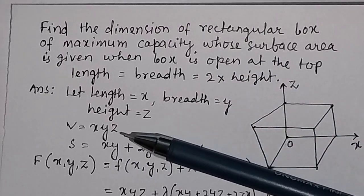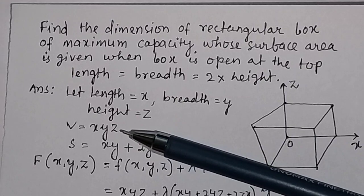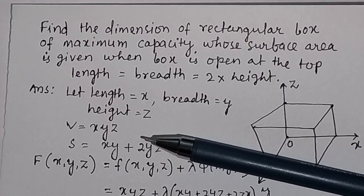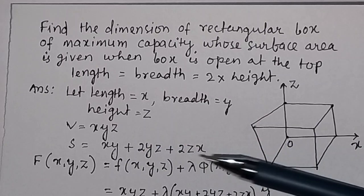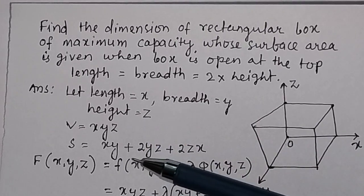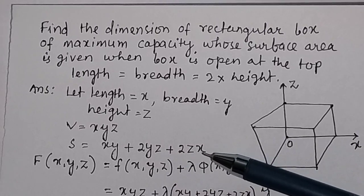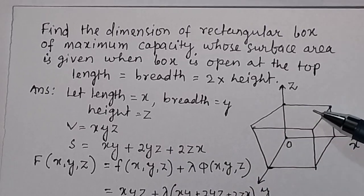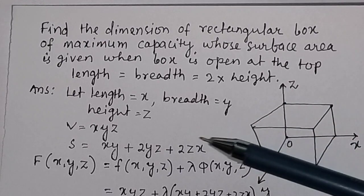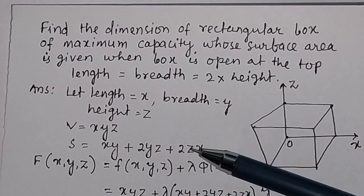Suppose the volume of the box is equal to x into y into z, because volume equals length into breadth into height. The surface area will be equal to xy plus 2yz plus 2zx, because the top surface is open — that is why the surface area will be equal to this much.